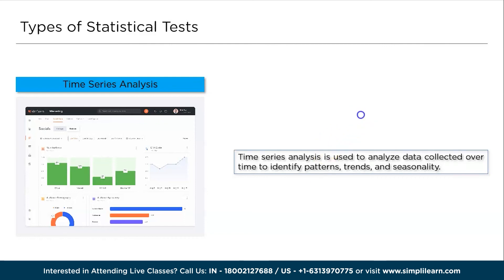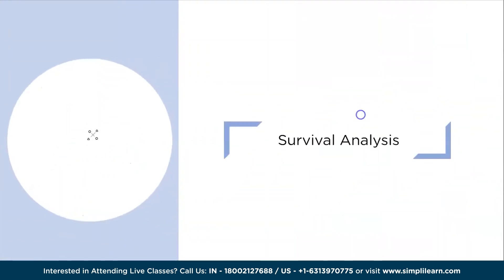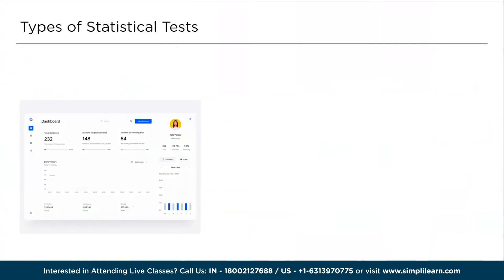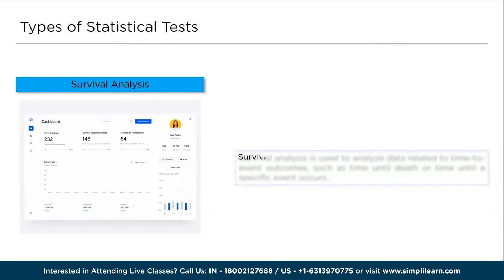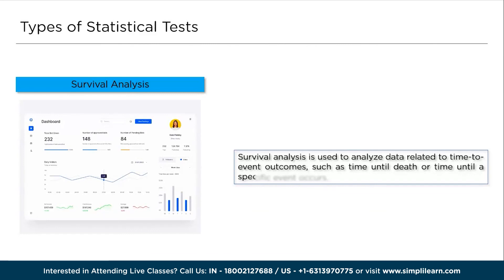The thirteenth one is survival analysis. Survival analysis is a statistical method used to analyze time-to-event data, where the focus is on the duration until a specific event occurs. It is commonly applied in medical research, epidemiology, and social sciences to study survival times such as time-to-death, relapse, or failure.